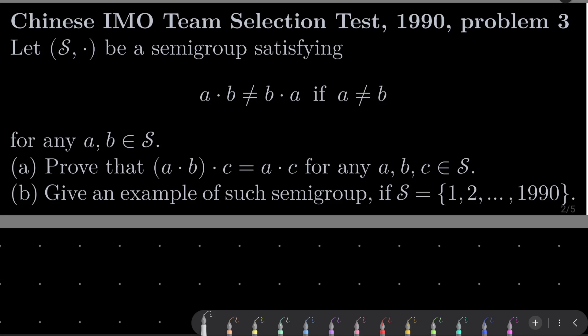Let S be a semigroup satisfying the following property: a·b ≠ b·a if a ≠ b, for any elements a and b of this set. I denote the operation of this semigroup by dot. We have two parts: part a, the interesting part, we wish to prove that a·b·c equals a·c for any three elements a, b, c of our semigroup. So this element b is superfluous, it can be omitted. In part b we wish to give an example of such semigroup if our set S equals {1, 2, ..., 1990}. There is a nice problem from general algebra.